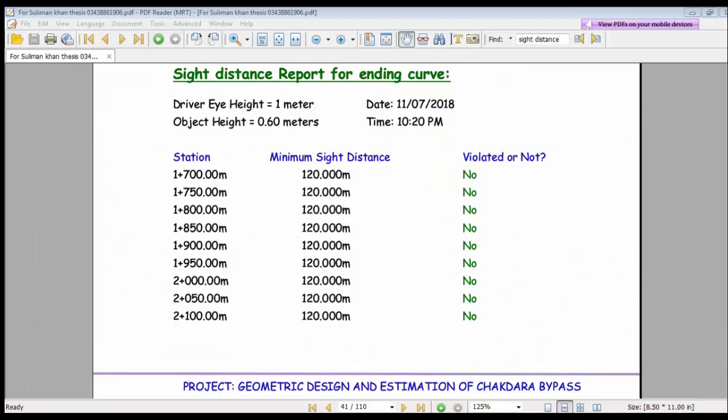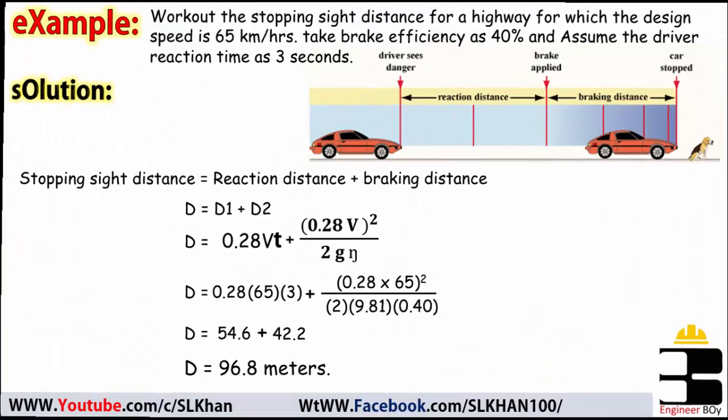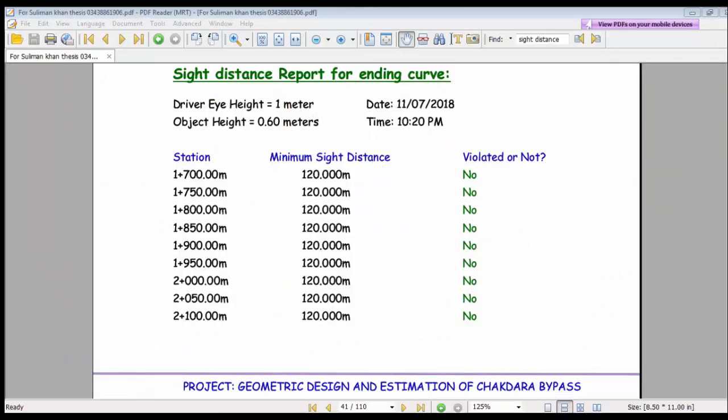And let me show you what we have done in our project. You can see this one right here, sight distance report and it's made by me for ending curves. The driver eye height taken is one meter and object height is taken 0.60 meters and the time, this is the report time just for the date. For demonstration we have minimum sight distance which is 120 meters, so this 120 is calculated by those formulas mentioned and explained a few minutes ago by me, right. So no violation is done here in our project.